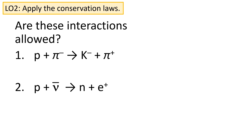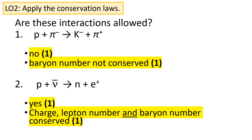Here's another question — pause the video and think about whether these interactions would be allowed. You'll need to test all four of those conservation laws for each interaction. The first one is not going to be allowed because baryon number would not be conserved. The second one is going to be allowed because each of the four conservation laws will be conserved.